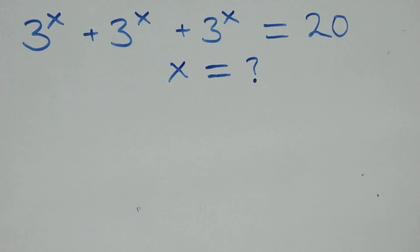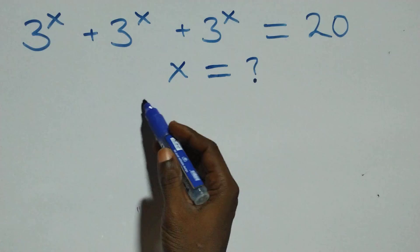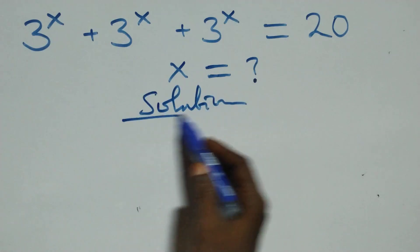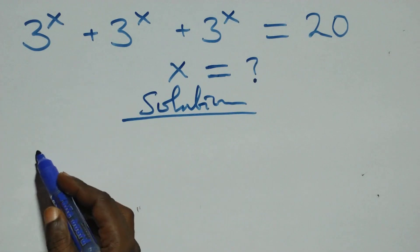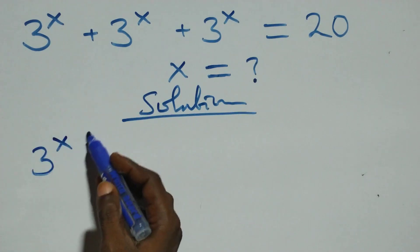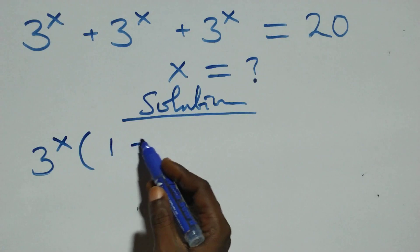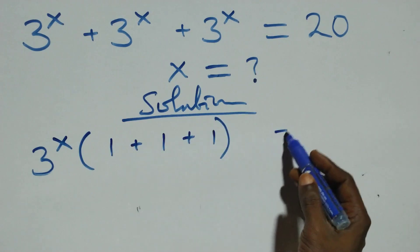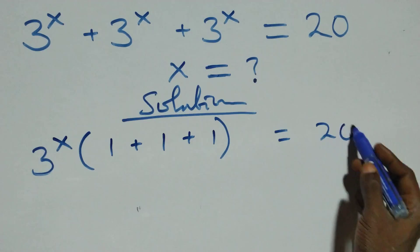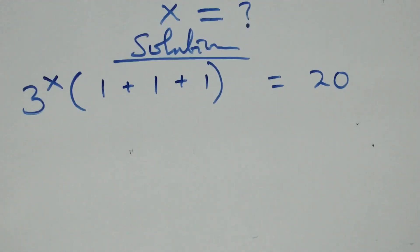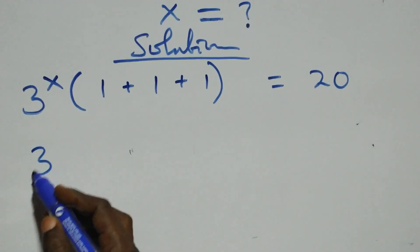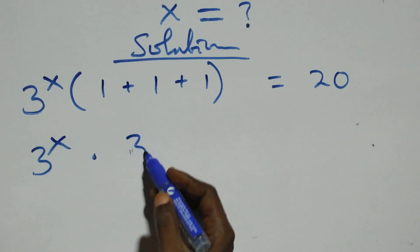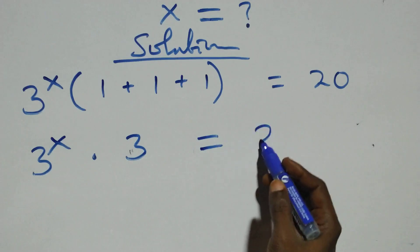Hello, welcome. Here's how to solve this nice exponential equation. We factor 3 raised to the power x out and we have 3 raised to the power x into bracket, 1 plus 1 plus 1, equals 20. This is the same thing as 3 raised to the power x times 3, equals 20.